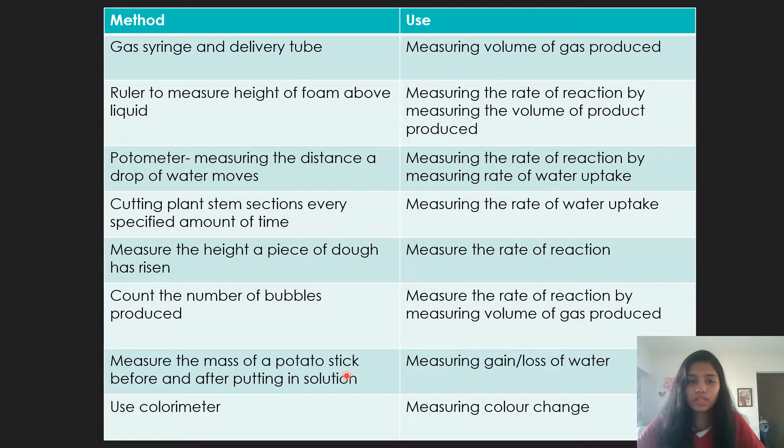Then measuring the mass of a potato stick before and after putting it in solution, that's basically where you measure the difference in mass. You subtract the smaller value from the greater value to measure the gain or loss of water. So that's for osmosis experiments. Then measuring the height of a piece of dough has risen. So if basically you have this much dough and then you add like yeast to it, it may rise to this much in slight heat. That's because the yeast is respiring anaerobically and producing bubbles of carbon dioxide that cause the dough to rise. So by dividing this change in height by time, you can find the rate of respiration again.